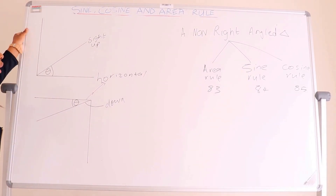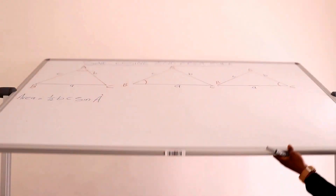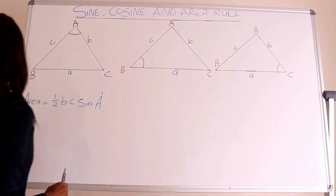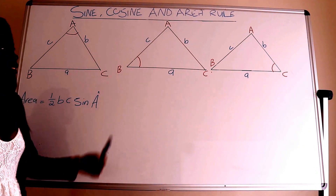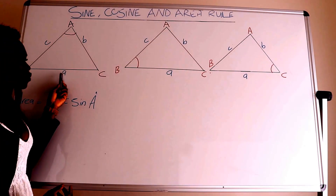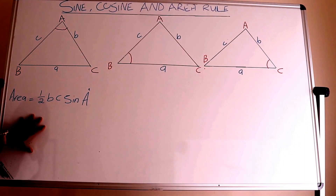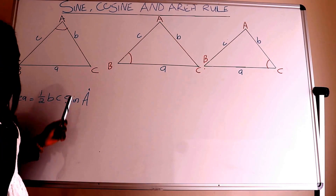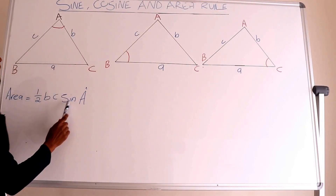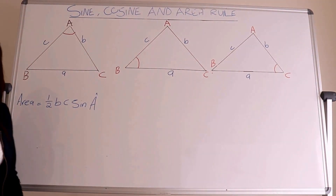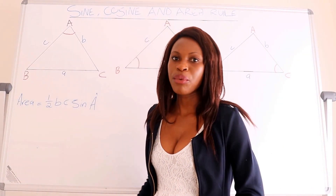Now let me show you about the area rule for non-right angle triangles. In the area rule, the first triangle is triangle ABC. The angle is at point A, and angle A is opposite to side BC. The rule says: the area of triangle ABC, when the given angle is angle A, equals half times BC times sine of angle A. That means if the angle is at A, we do not include the side of A — we only include side B and side C, and for A we only include the angle.